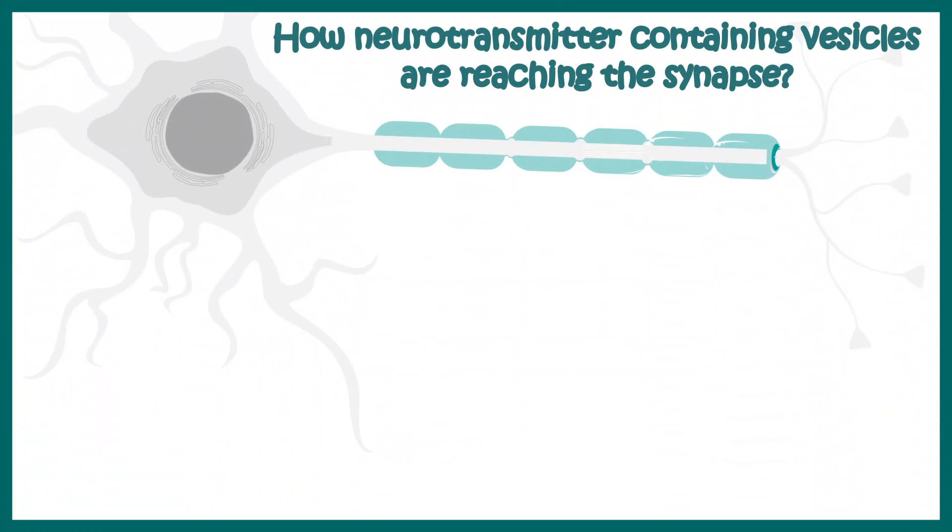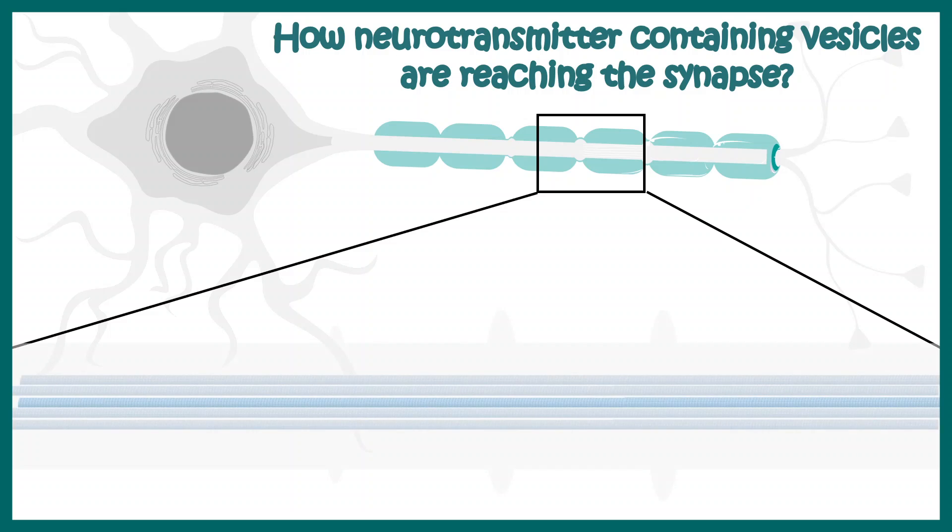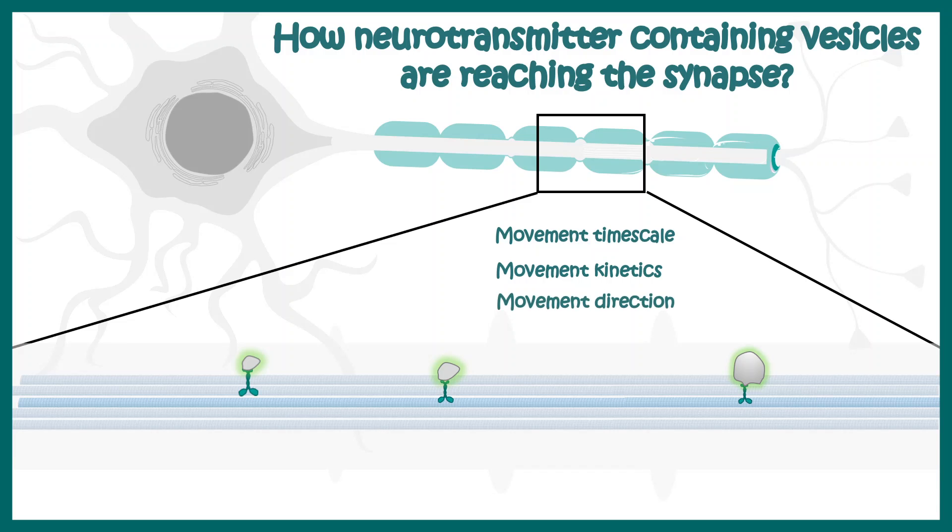Also, biology is all about motion. Looking at how vesicles are trafficked from the cell body to the synapses is one of the criteria that neurobiologists use. Neurobiologists track the vesicle motion through these neuron axons. There are specific transporters which would take these vesicles to the synapses. Now if we label the vesicle by some means, we can actually look at the motion of these vesicles and calculate several parameters such as movement timescale, movement kinetics, movement direction, etc.